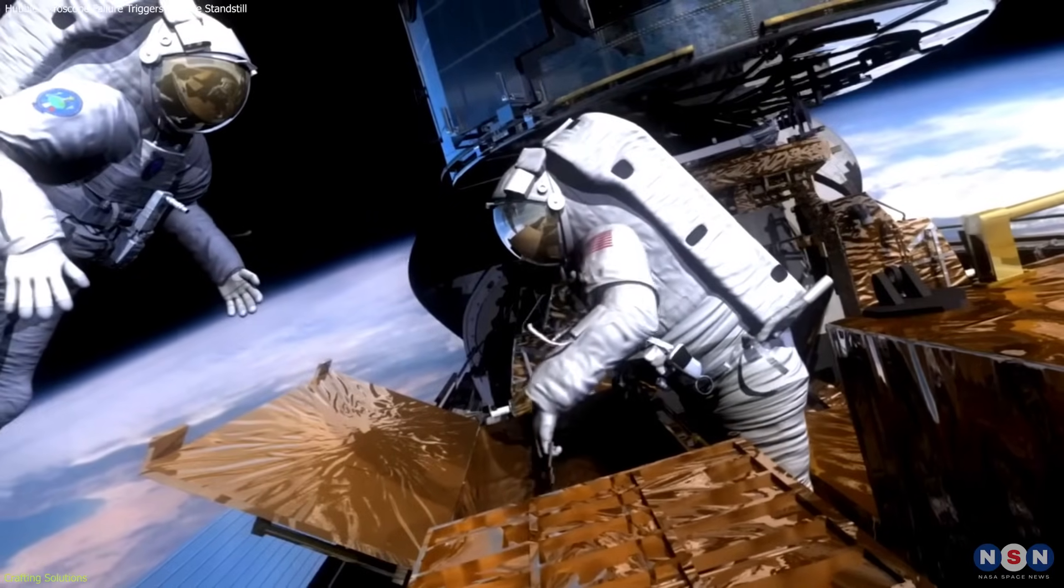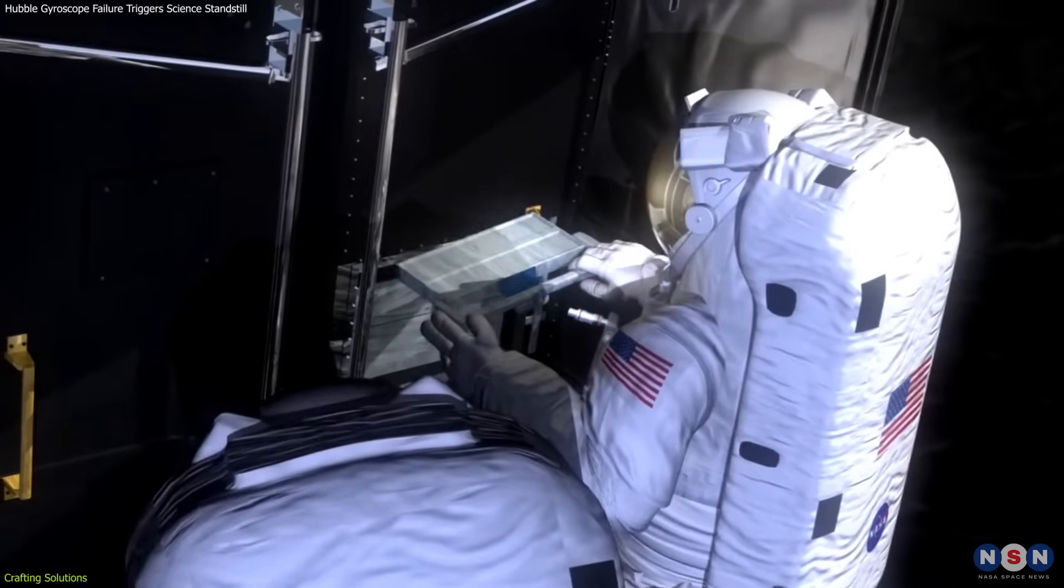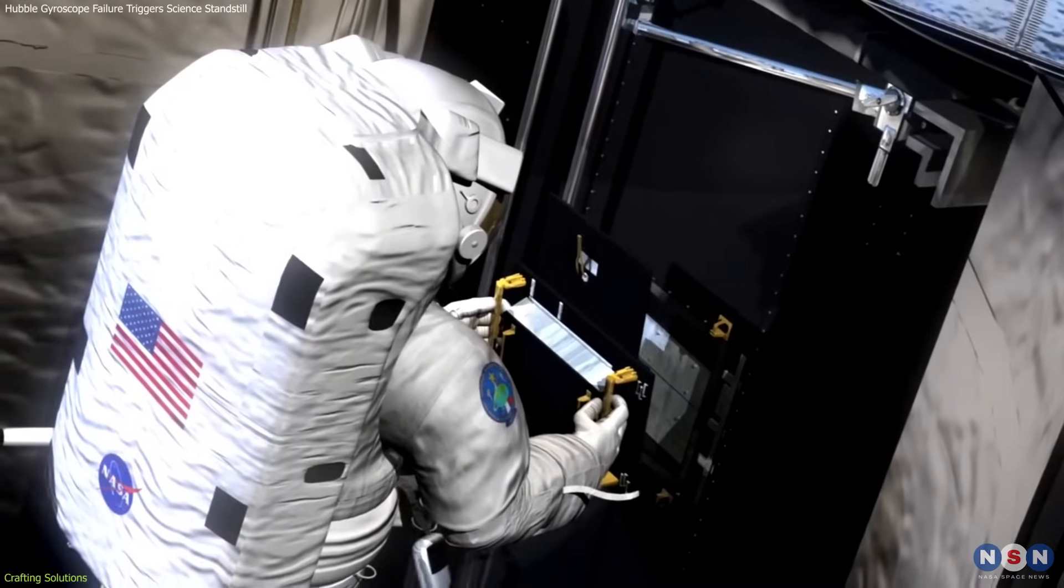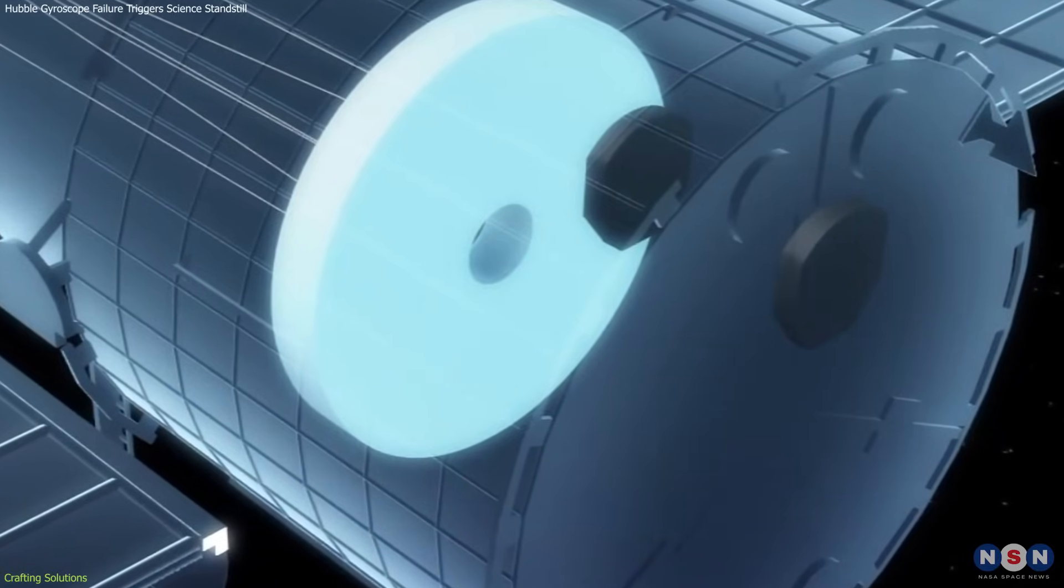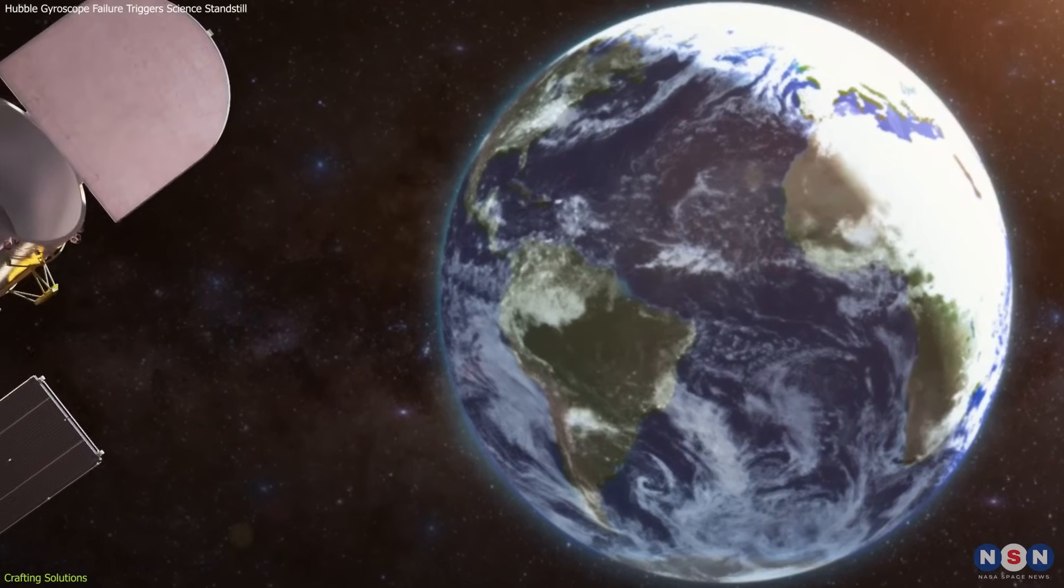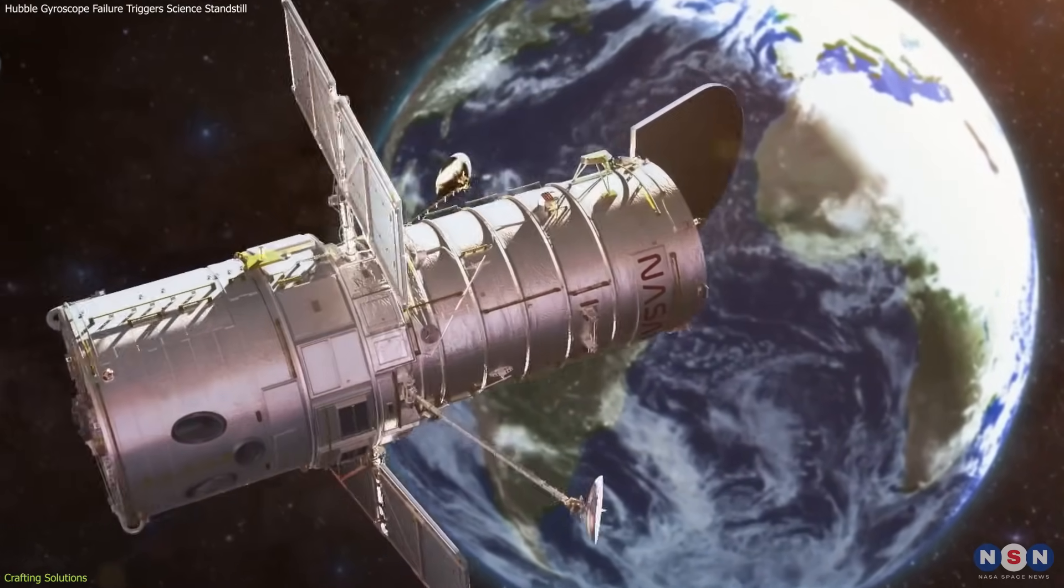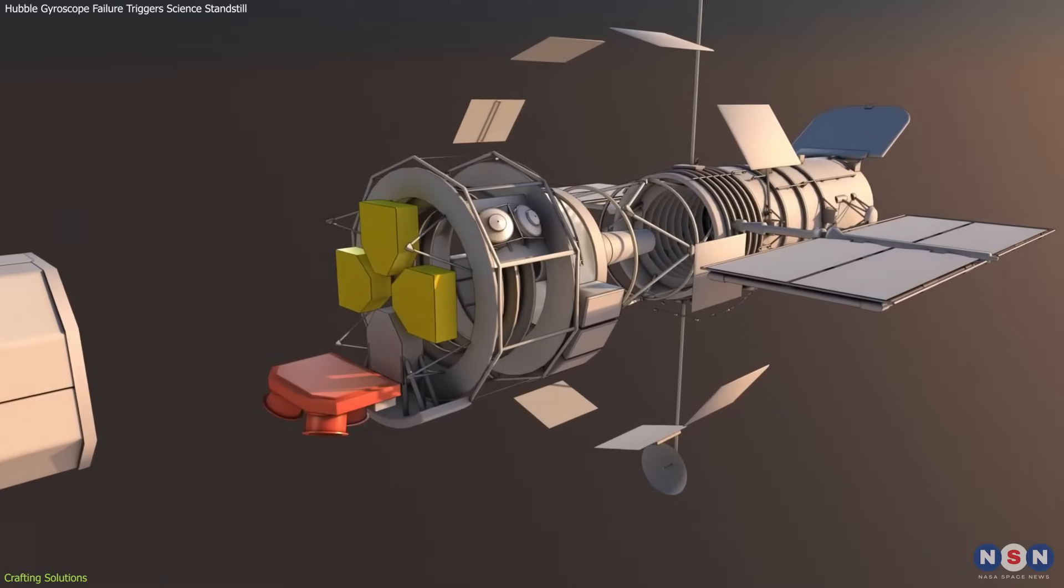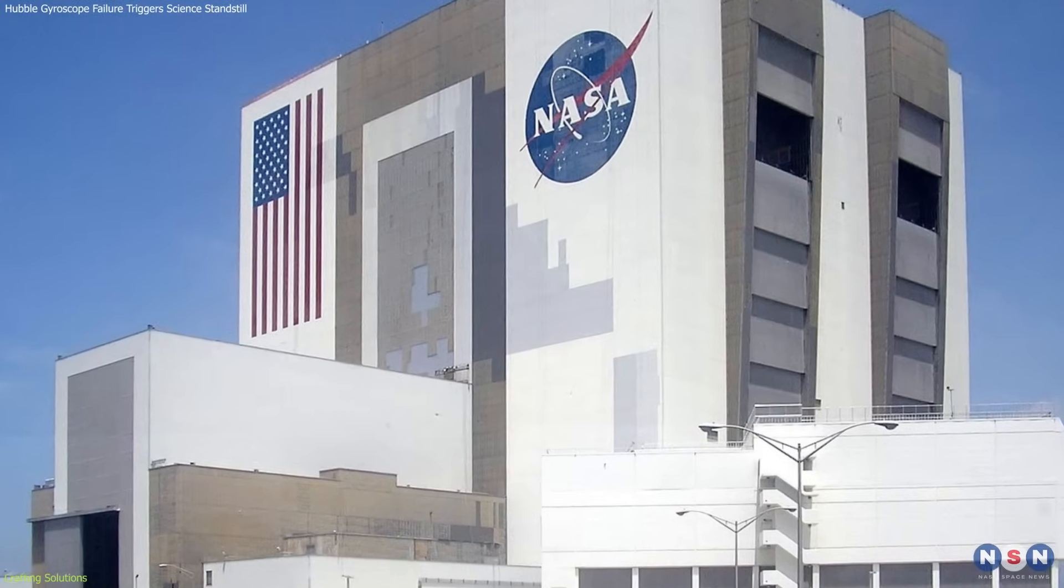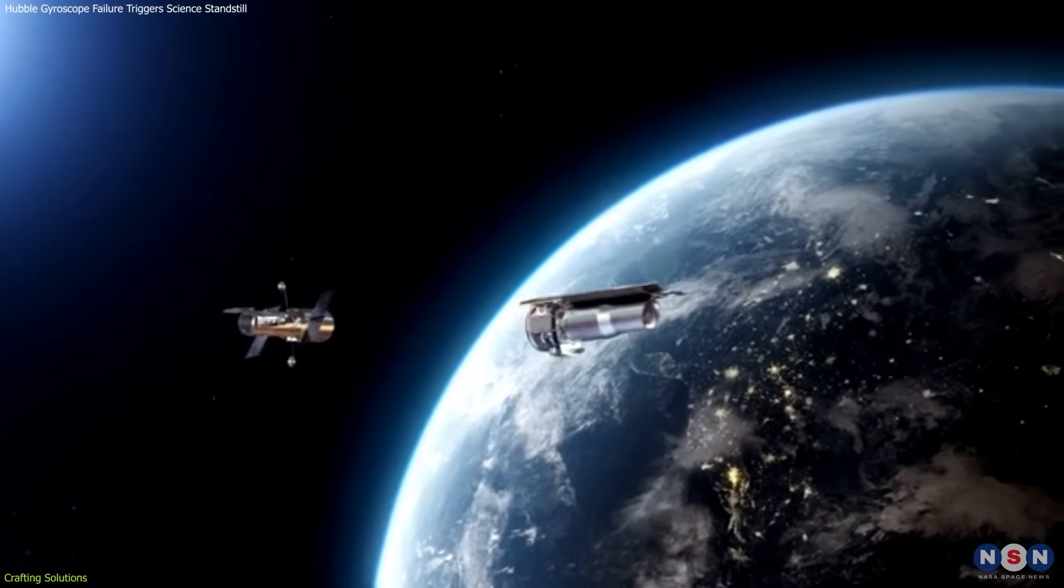This strategy is reminiscent of the 2009 servicing mission, when astronauts replaced all six of Hubble's gyroscopes, three of which are currently operational. The decision to operate with fewer gyroscopes is not taken lightly. It requires a careful balance between maintaining enough operational capacity to continue valuable scientific work and conserving the remaining gyroscopes for future use. This approach demonstrates NASA's ability to adapt to changing conditions, a crucial skill for managing aging space assets.